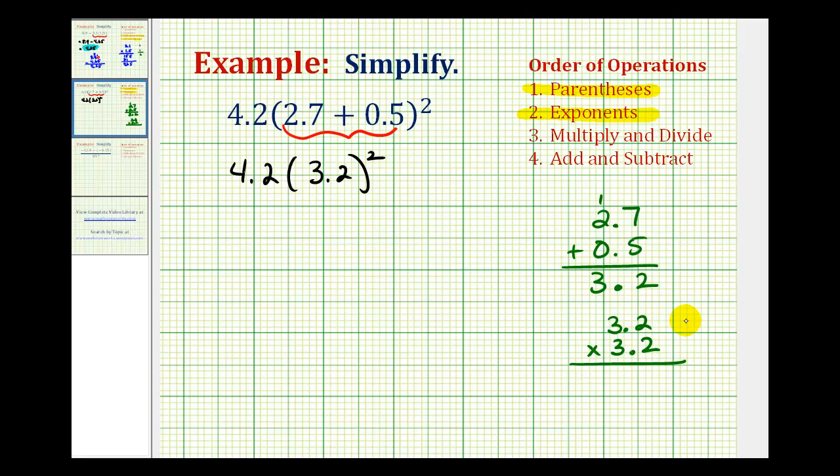Notice how we have 1 decimal place here as well as here, therefore the sum must have 1 plus 1, or 2 decimal places. So now we'll go ahead and multiply and then place the decimal in the correct position when we finish.